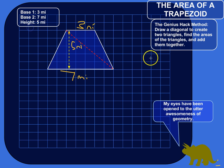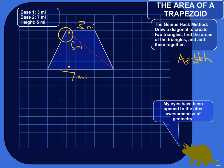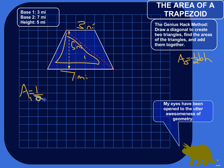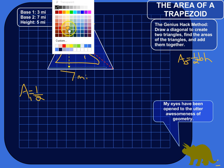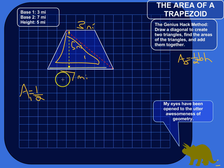The area of a triangle is one-half base times height. Let's look at triangle one first. The area of triangle one is one-half times base times height. When doing this, just use the base of the trapezoid that's part of the triangle. This base is part of triangle one, so the base is seven miles.